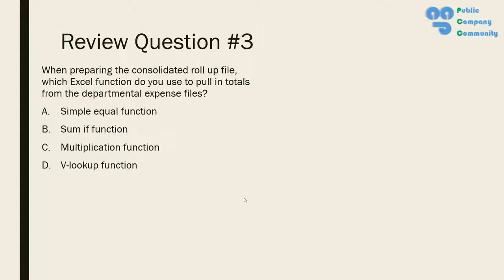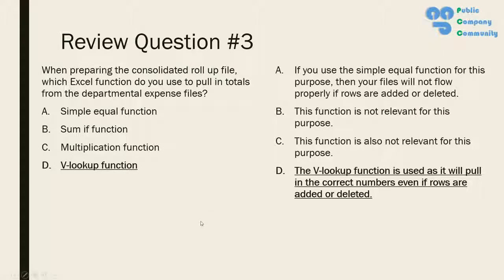Question three: when preparing the consolidated rollup file, which Excel function do you use to pull in totals from departmental expense files? A) Simple equal function; B) SUMIF function; C) multiplication function; or D) VLOOKUP function. The answer is D. We use VLOOKUP so that even if rows are added or deleted from the source file, the function still works properly. The simple equal function would break if rows are added or deleted, and SUMIF and multiplication functions are not relevant here.